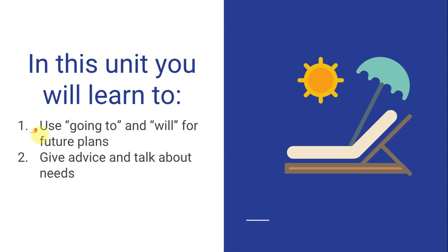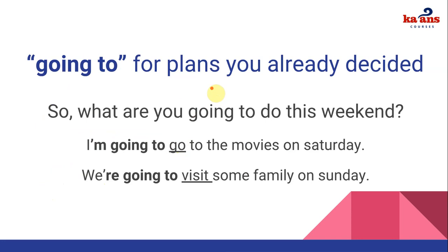Let's begin with the first topic: using going to and will. As you know, we use will and going to for future plans. The idea is to talk about plans you already decided and plans you are unsure of. For the first part, we use going to for plans you already decided.